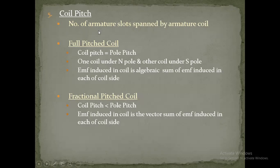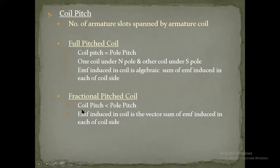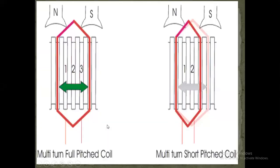Coil pitch is the number of armature slots spanned by an armature coil. A full pitch coil means the coil pitch equals the pole pitch — one side of the coil is under the north pole and the other side is under the south pole. The EMF induced in a full pitch coil is the algebraic sum of EMF induced in each coil side. A fractional pitch coil means the coil pitch is less than the pole pitch, and the EMF induced is the vector sum of EMF induced in each coil side.